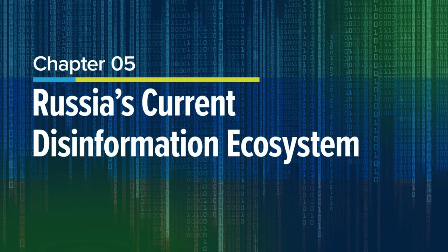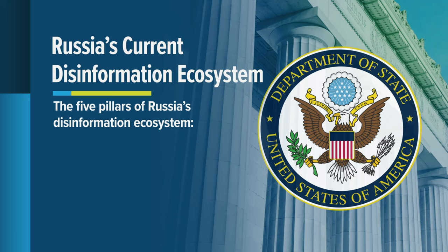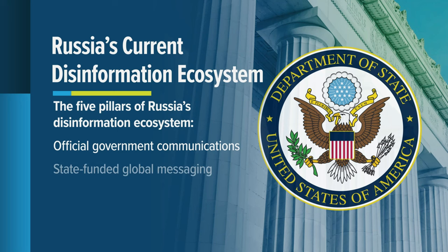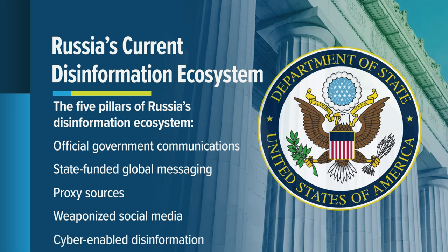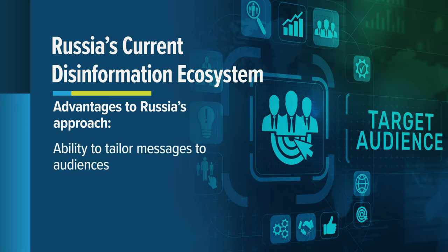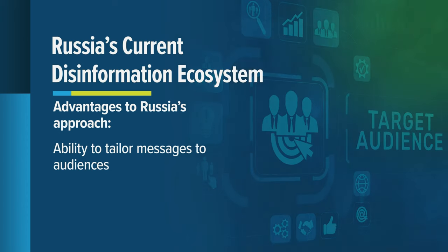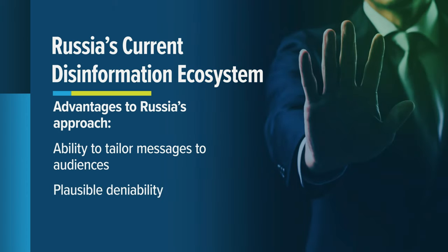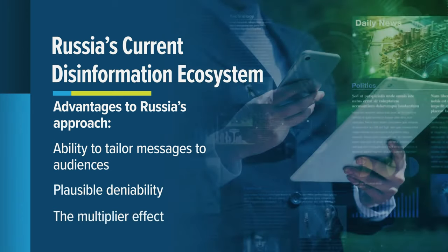Chapter 5: Russia's Current Disinformation Ecosystem. Russia's ecosystem for the production and dissemination of disinformation relies on overt and covert platforms. The U.S. State Department has identified five pillars of this disinformation system: official government communications, state-funded global messaging, cultivation of proxy sources, weaponization of social media, and cyber-enabled disinformation. This multi-pronged approach provides three advantages. First, segmentation of the media allows actors to tailor their messages to different audiences. Second, plausible deniability allows Russian officials to deny disinformation sources through proxy messengers. Last is the multiplier effect, whereby disinformation produced by one outlet is copied by others to accelerate its spread.